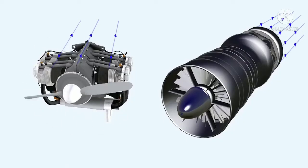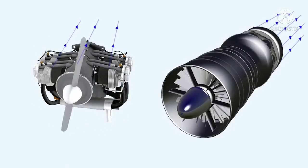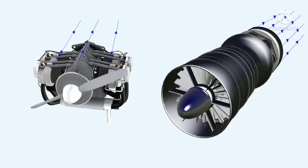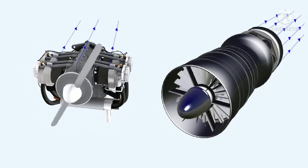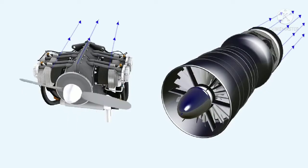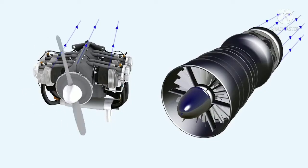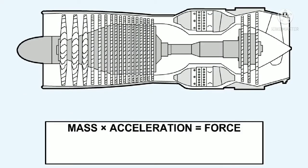The principle of the gas turbine engine is basically the same as that of the piston engine propeller combination. They both propel a mass of air backwards. Mass times acceleration equals force. In a gas turbine engine, the mass, M, mentioned in the equation is the air delivered by the compressor.